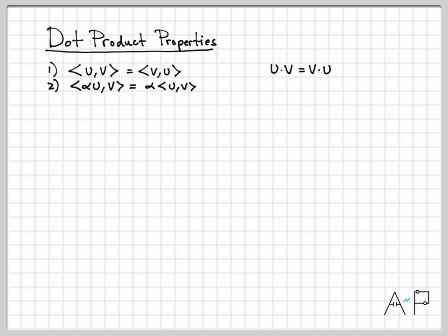What about property two? Property two is the scale factor being able to be pulled out of the argument of the inner product. When I'm talking about the dot product, that means if I have alpha u dotted with v, that is equal to alpha times u dot v. So that's a useful property of the dot product.